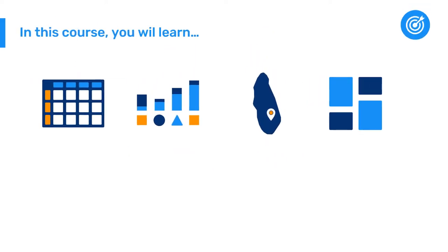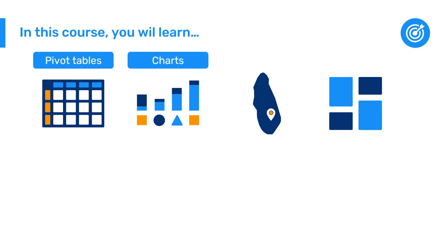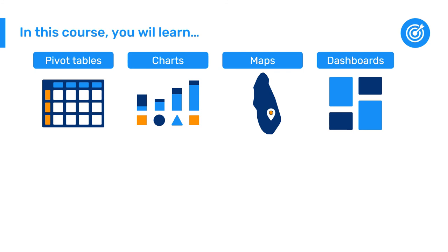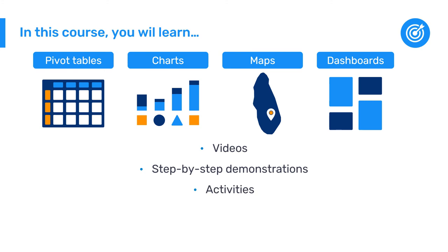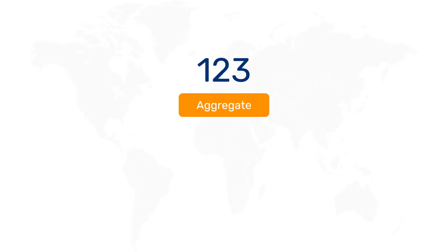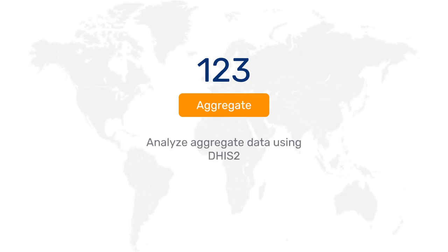In this course, you will learn how to create and edit pivot tables, charts, maps, and dashboards through videos, step-by-step demonstrations, and activities. You will also have the chance to interact with a DGIS-2 training instance where you can put your new learnings into practice. This course will prepare you to make sense of aggregate data using DGIS-2 data analysis tools.